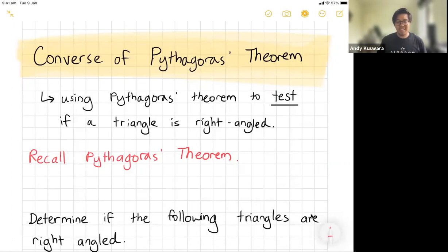So we're actually going to use it to test if a triangle is right angled or if it's not. That's all it is. We're trying to use the formula to try to prove something.